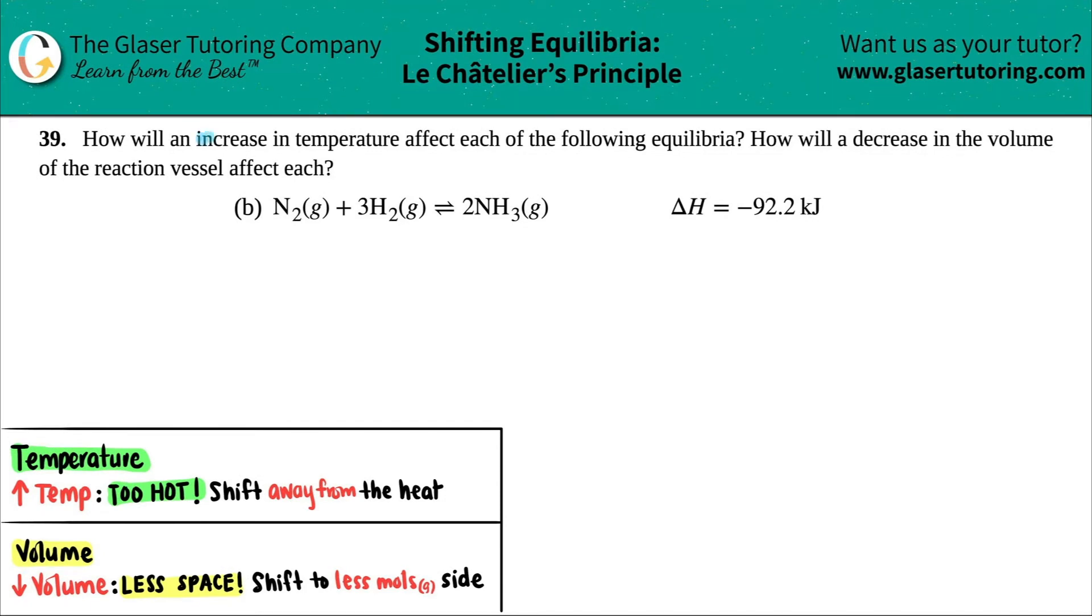Number 39, how will an increase in the temperature affect each of the following equilibria, and then how will a decrease in the volume of the reaction vessel affect each? And then we have letter B. So in this case, they give us a balanced equation. I'm just going to rewrite it a little bit bigger just so that we can work with it better.